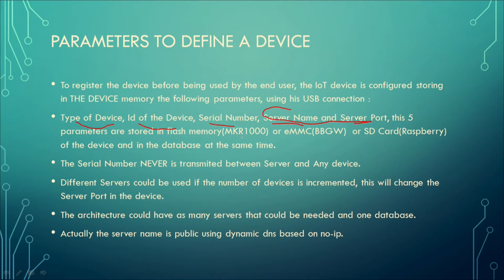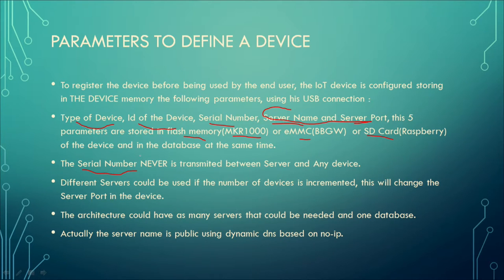Three types of devices are used here: the MKR-1000, which uses flash memory; the EMCC with BeagleBone; and SD card with Raspberry Pi. The serial number, by definition, is never sent through the network in order to have more security — we will see later how this works. Different servers only need a port change, and we can have another server for other devices. The server name is probably using a DDNS.